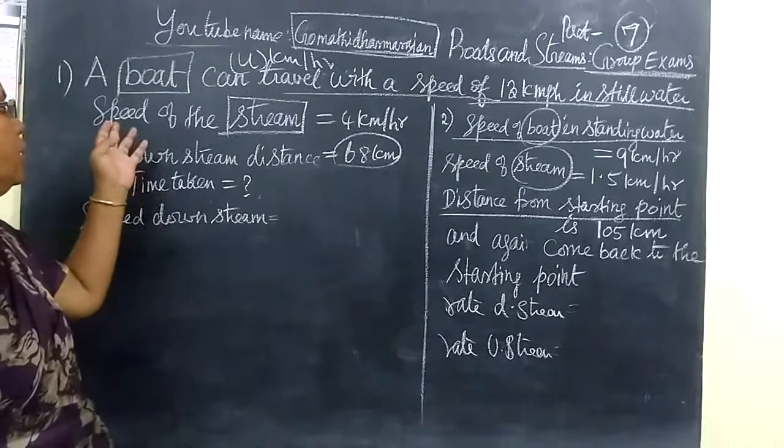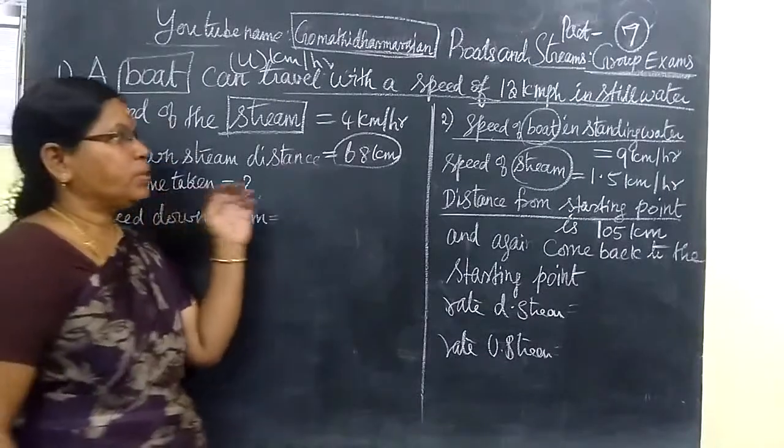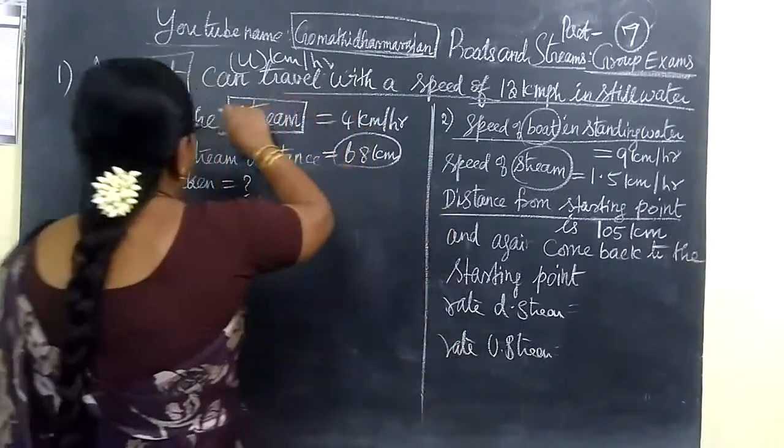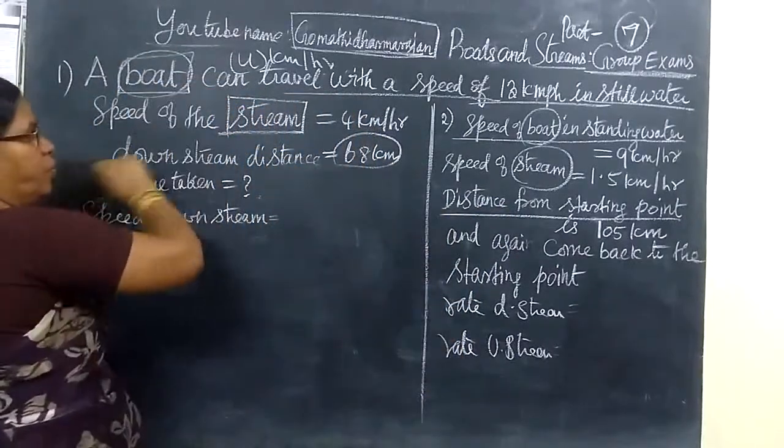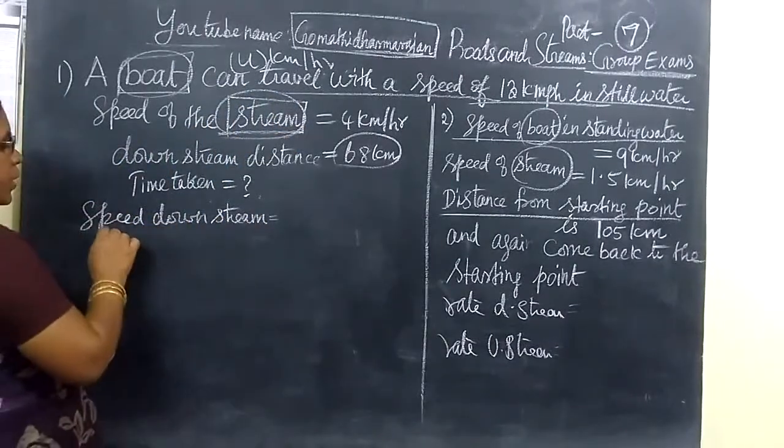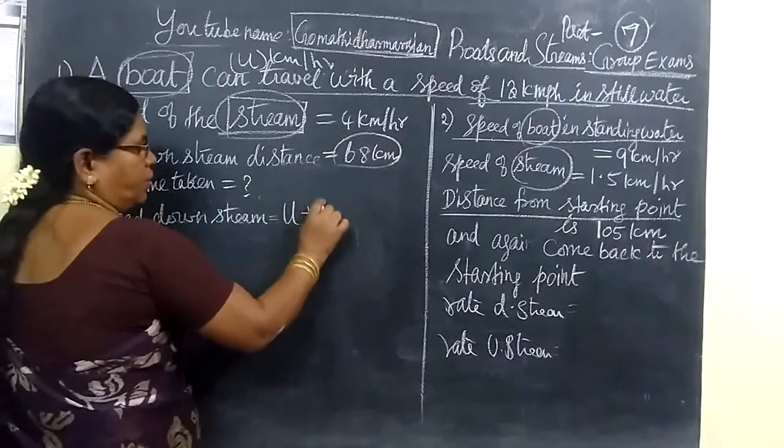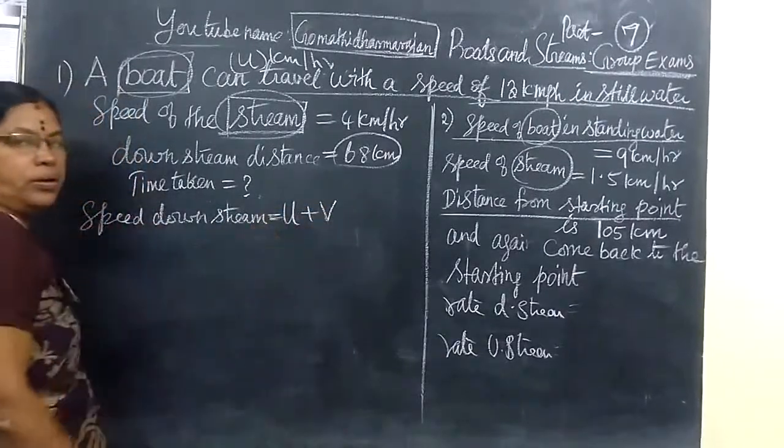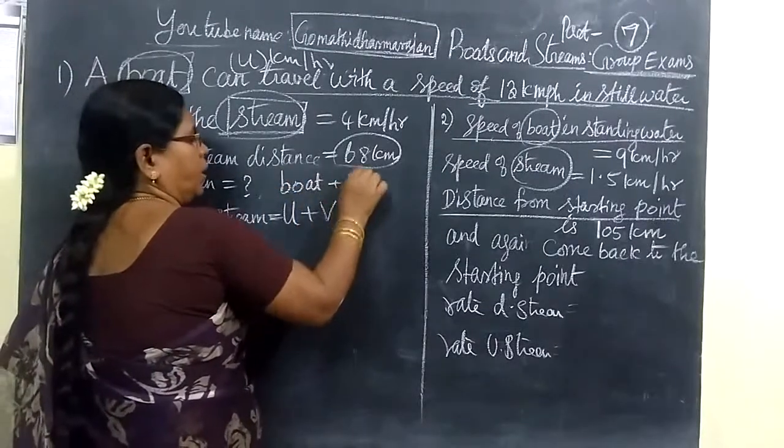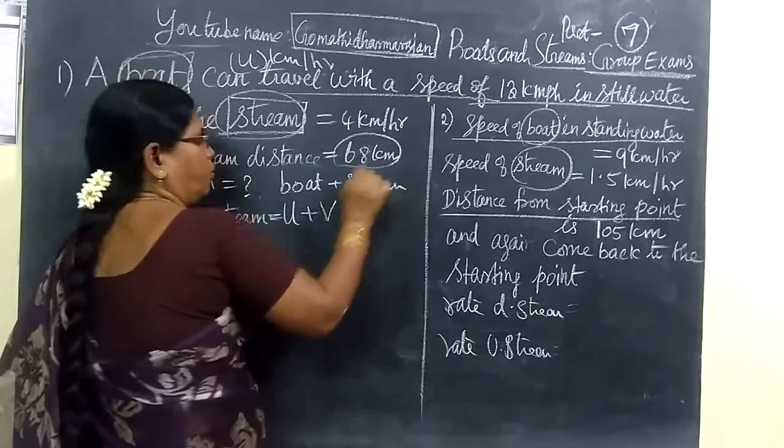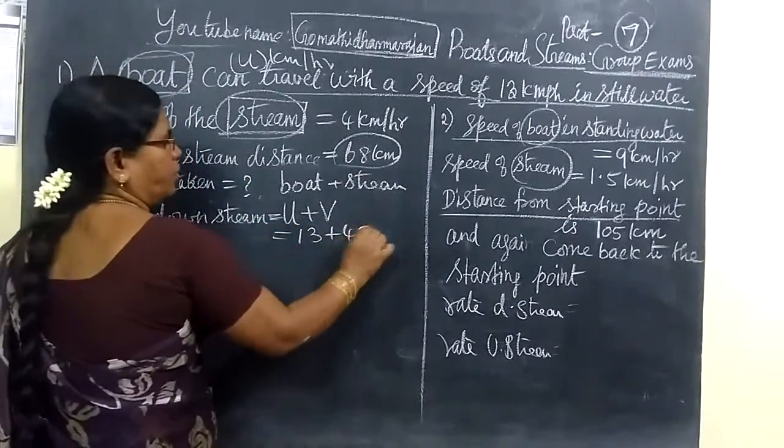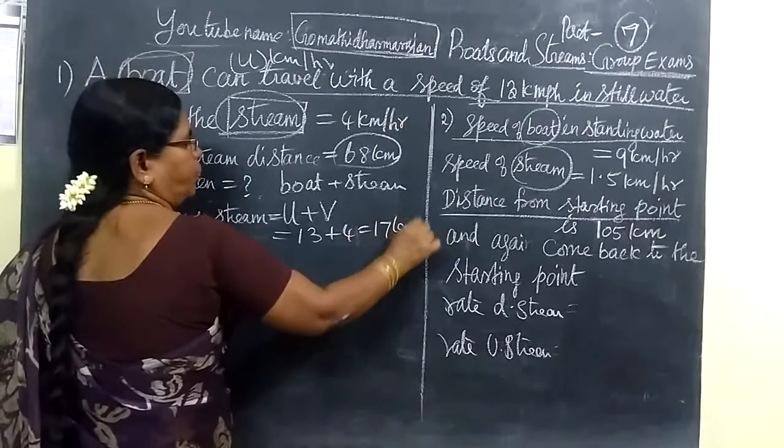The first question is: a boat can travel with a speed of 13 km per hour in still water. The speed of boat and speed of stream are given, then immediately you add for downstream. From the previous question, you add speed of boat and speed of stream to find downstream. This equals 13 plus 4 equals 17 km per hour.